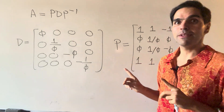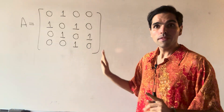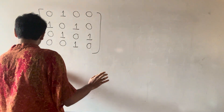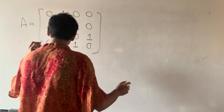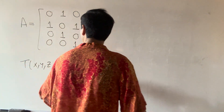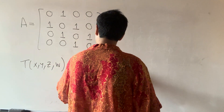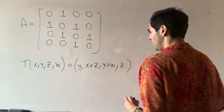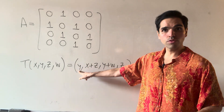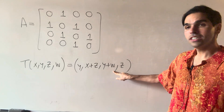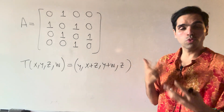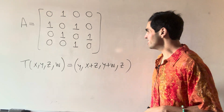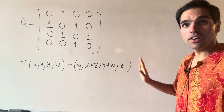And last but not least, I want to give you a little application of this. Where can you see this concretely? This matrix represents the following linear transformation: T(x, y, z, w) equals (y, x plus z, y plus w, z). What this represents is: a swapping operation, a shear transformation, another shear transformation, and again swapping. So it's kind of remarkable how this swapping and shearing operation produces the golden ratio, which is very cool.